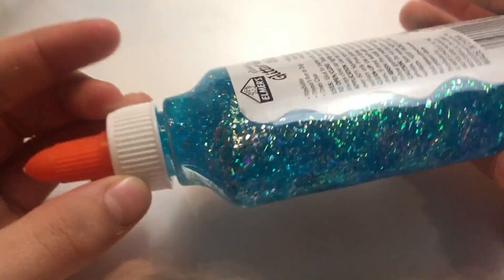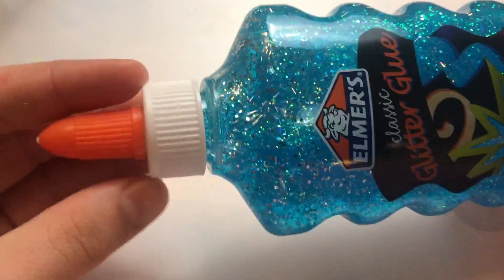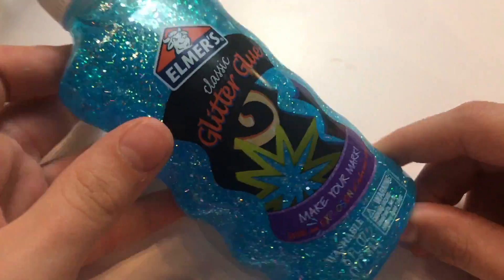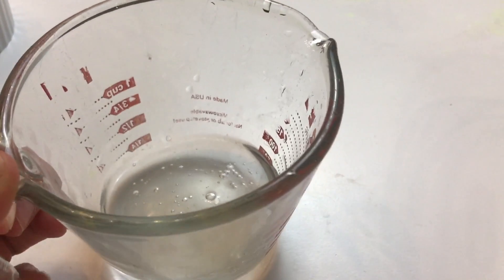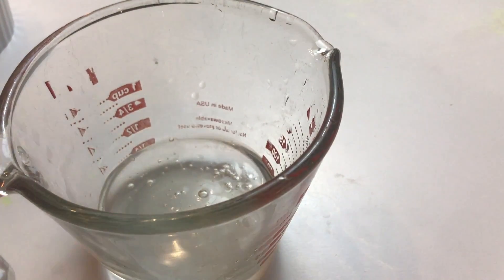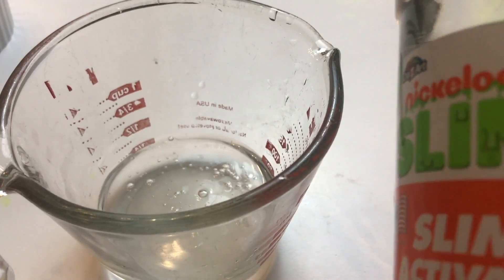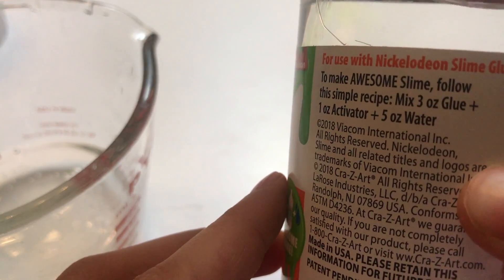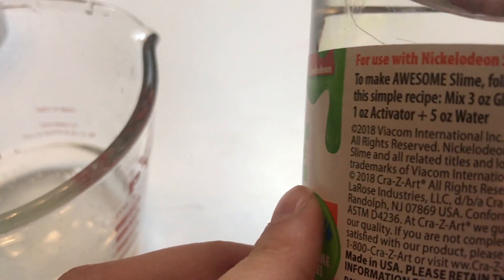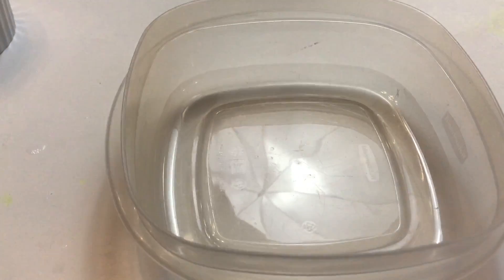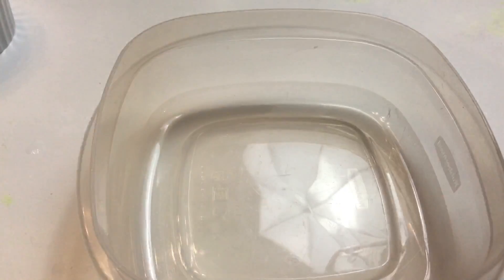Next since it's kind of wintry season I got some of this glitter glue. I have three ounces of glue and that's what the activator said. It said to call for three ounces of glue, so I'm just gonna pour the three ounces of glue in.